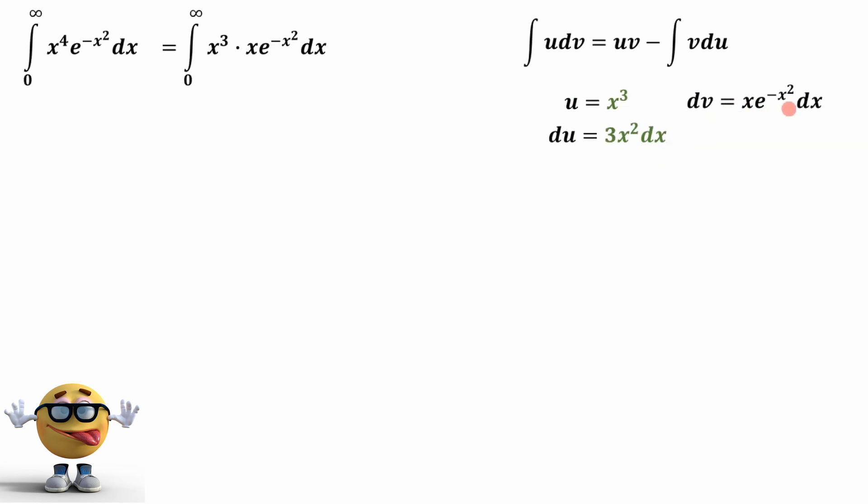Now dv is going to equal everything else. This is dv right here, this is u, so this is dv, everything else, and the integral of this I did in another video equals negative e to the negative x squared over 2. It's a very short video, but I hope you can appreciate that you can use substitution to do this integral, and if you take the derivative of this, you will get this. So there we go.